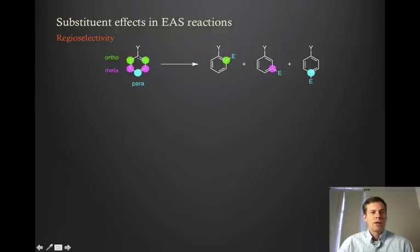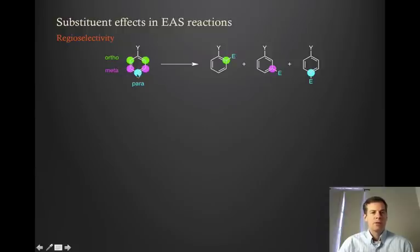The positions that are next to that substituent — with the green circles around them — are called the ortho positions. The ones with the pink, two positions away, are called meta. And then the one that's directly opposite the substituent is called the para position.